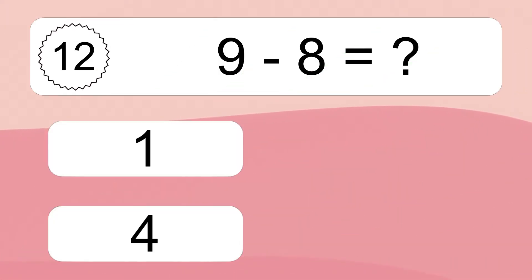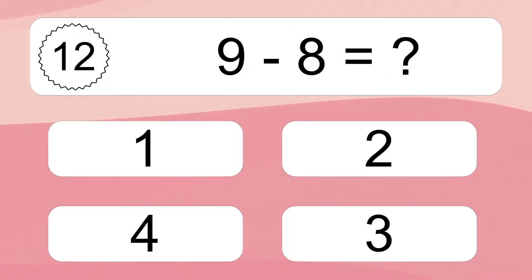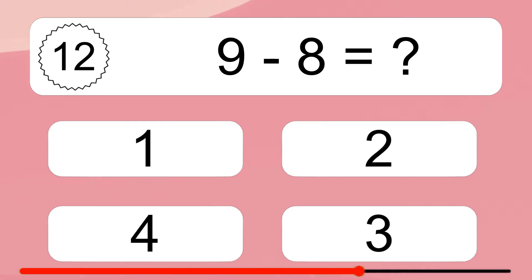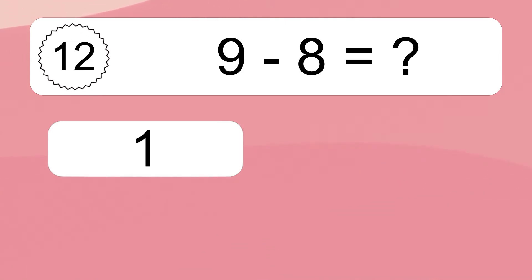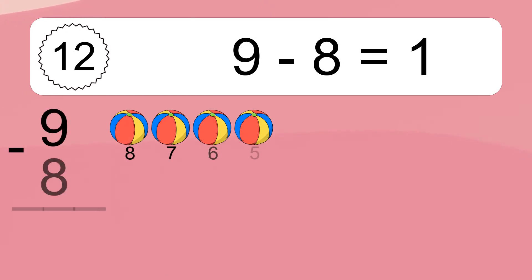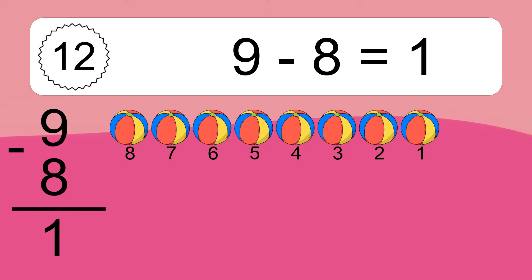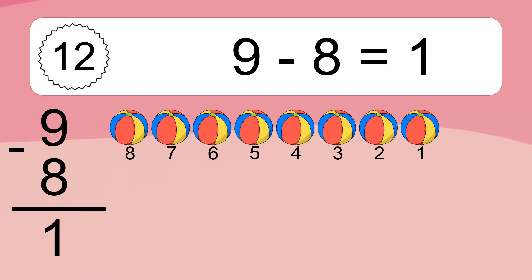9 minus 8 equals what? 9 minus 8 equals 1. Let's count it: 8, 7, 6, 5, 4, 3, 2, 1.